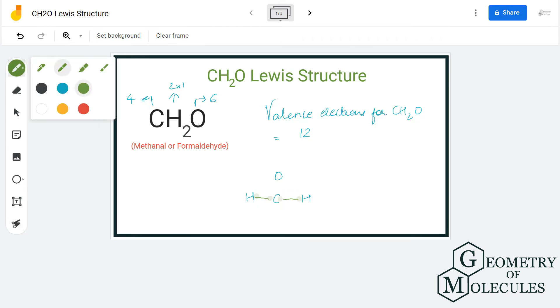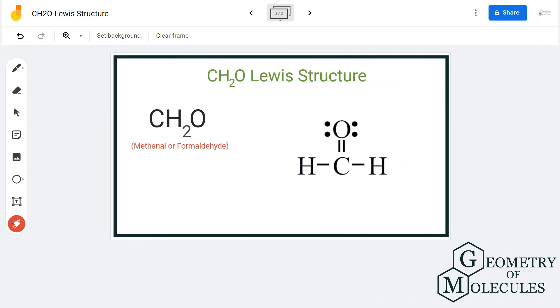Oxygen atom requires two valence electrons to complete its octet, and carbon atom also requires two electrons to complete its octet. So the rest two valence electrons that carbon atom has in its outer shell will be shared with oxygen atom so that octets for both these atoms are complete.